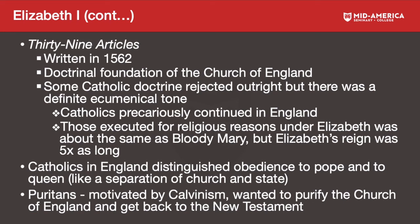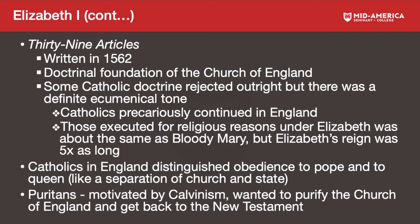In 1562, the 39 Articles were written. Elizabeth the First was head of the Church of England, and the 39 Articles became the doctrinal foundation of the Church of England. The church had gone from very Catholic under Henry the Eighth, to Protestant, back to Catholic under Mary, and now Protestant again. The 39 Articles outright rejected some Catholic doctrine but had an ecumenical tone — some doctrine was changed slightly or stated differently while retaining some Catholic theology.